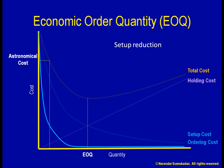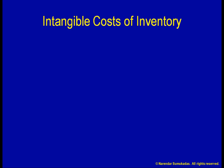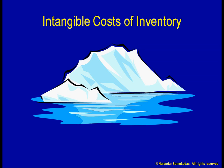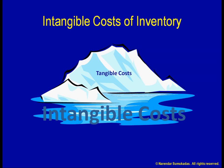Another important aspect of lean systems is the treatment of inventory as an outright evil. The primary reason for such an attitude is that inventory is a band-aid that covers up many evils. In addition, whereas it is relatively easy to identify the tangible costs of holding inventory, most treatments of inventory holding cost ignore the intangible costs. The tangible costs, however, are often only the tip of the iceberg.